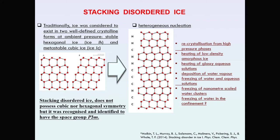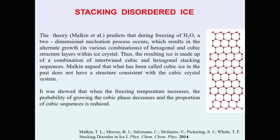Because our diffraction patterns were very similar to the stacking-disordered ice shown by Malkin, we investigated stacking-disordered ice, which consists of hexagonal and cubic layers. Its growth occurs due to heterogeneous nucleation and is observed in processes such as recrystallization from high-pressure phases, heating of glassy solutions, and freezing of nanometer-scale water clusters. Stacking-disordered ice does not possess cubic or hexagonal symmetry, but has been identified with the space group P3M1. The Malkin theory predicts that during freezing of water, a two-dimensional nucleation process results in alternate growth of hexagonal and cubic structure layers within ice crystals.